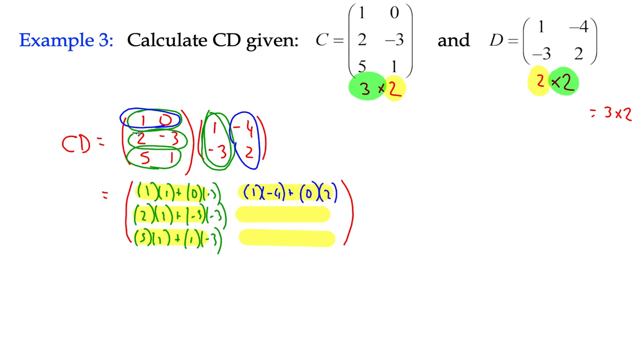And I repeat that for row two, column two, two times negative four plus negative three times two. And then for the last one, row three, column two is going to be three times negative four plus one times two.